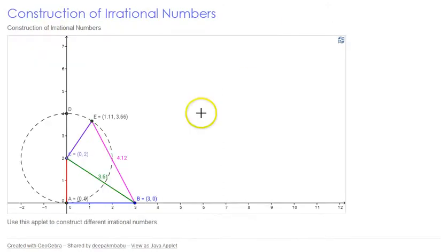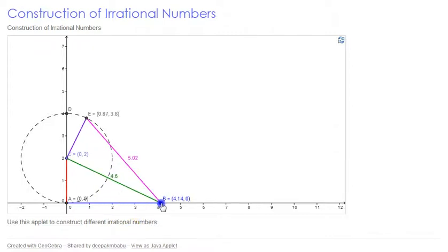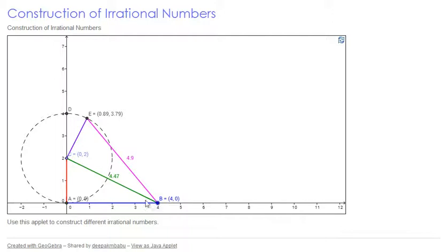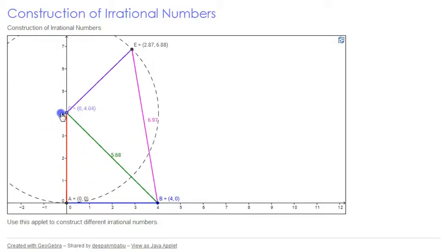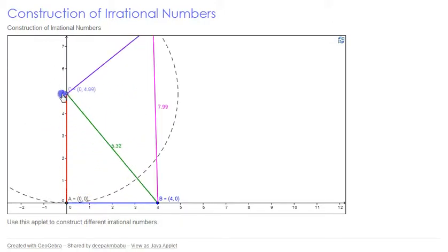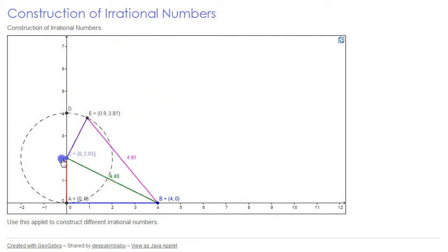We move to the second one, which is the construction of irrational numbers. Again, as I said, we can move B and C. So I move B, I can move C. So I can do all that sort of thing.